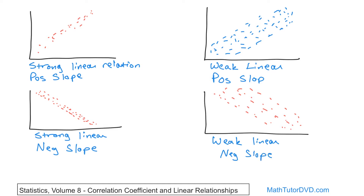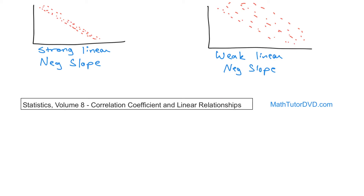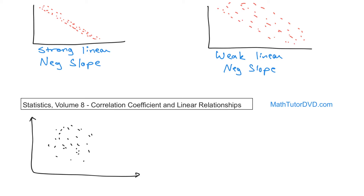Now this is going to tie right into when we're talking about the correlation coefficient in just a second. But before that, let me draw two more cases. What if we had data that looks something like this — just a random spread of dots? Do you think that's a linear data set? To me, this does not look like a line. You can't say if it's going up, down, left, right, or whatever — it's just a random ball. So what we call this is: there's no relationship.